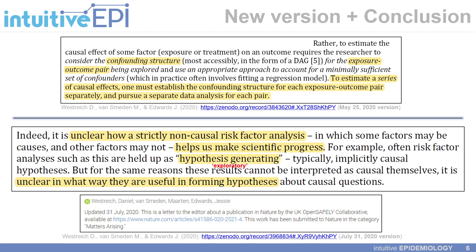In terms of a new version of this comment released on July 31st, Westerreich, Van Smeden, and Edwards talk about how it is unclear how a strictly exploratory study or non-causal risk factor analysis helps us make scientific progress. They say risk factor analyses like this are often held up as hypothesis-generating or exploratory, but it is unclear in what way they are useful in forming hypotheses about subsequent hypothesis-confirming questions. While I agree with this, I'm going to propose a strategy where hypothesis-generating studies can still be completed while acknowledging these concerns, and can be made far more useful if the following strategies are applied.